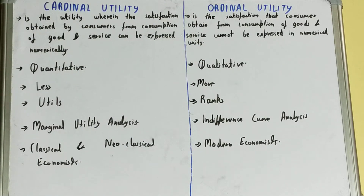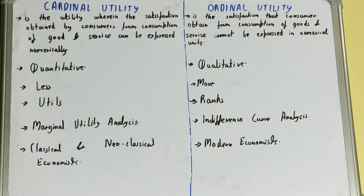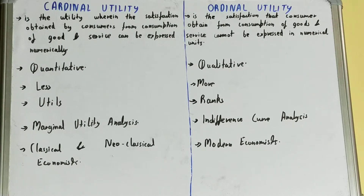If we talk about the meaning, cardinal utility is the utility wherein the satisfaction obtained by the consumer from the consumption of goods and services can be expressed numerically. When it is possible to express the satisfaction in numerical form, it is called cardinal utility.